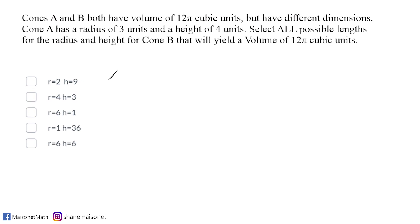All we have to do with this problem is take the volume formula for a cone, which is π times radius squared times the height divided by 3. Remember it's the same formula as the volume of a cylinder except we divide by 3. All we have to do is substitute each radius and each height and see if it makes a volume of 12π cubic units.